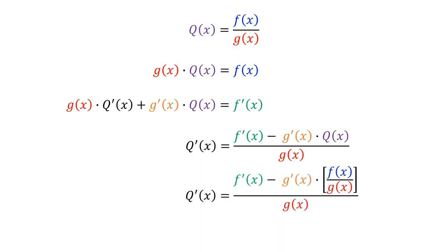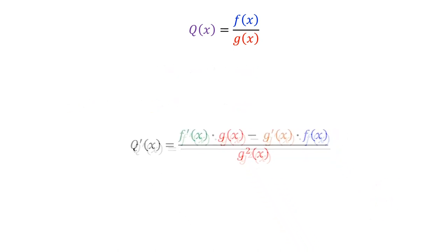Then we'll substitute f over g for q, and then multiply the whole thing by g over g, which, after doing some algebra, gives us this formula. And this is how we get the quotient rule.